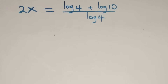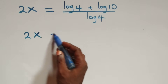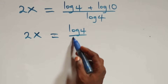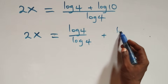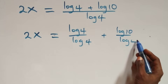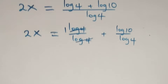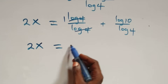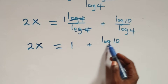We separate this into two fractions: two x equals to log four over log four, plus log ten over log four. Log four cancels each other and we have one left. Which implies we have two x equals to one plus log ten over log four.